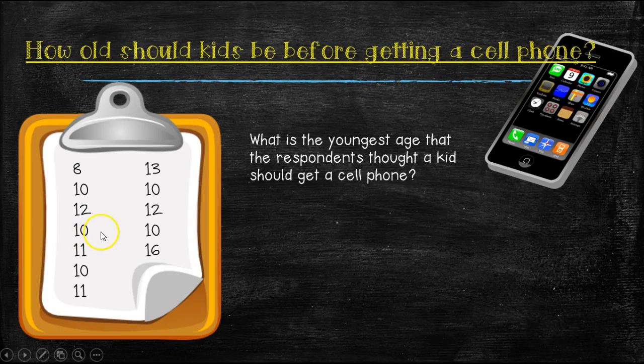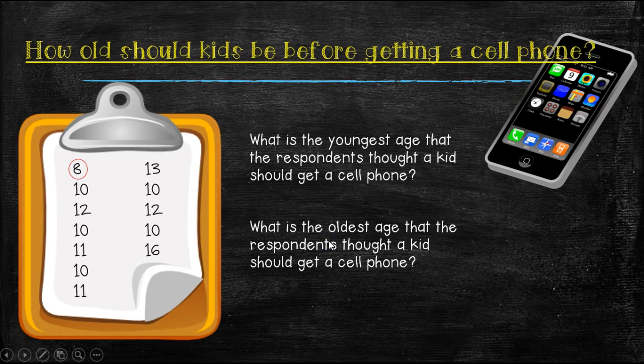First of all, just by looking at this data, is it possible to know what the youngest age that respondents thought a kid should get a cell phone? Well, it is, because we can go through and we can look and say, what number here out of all these numbers is the least? And we know that that number is eight. What is the oldest age that respondents thought a kid should get a cell phone? Well, if you go through each one, you're just looking for the highest number, and the highest number would be 16.